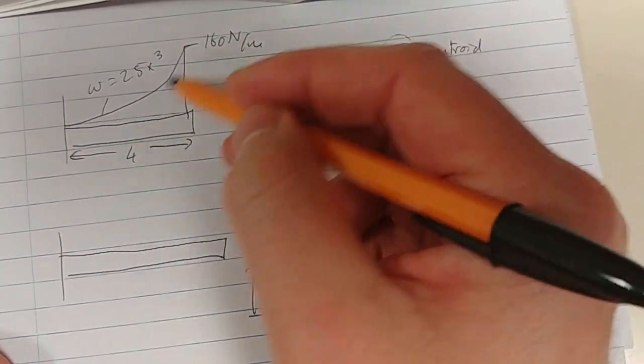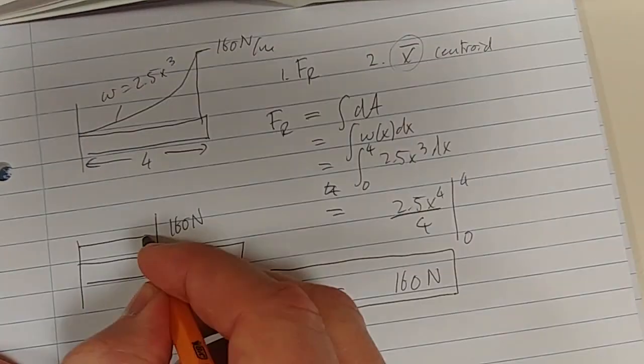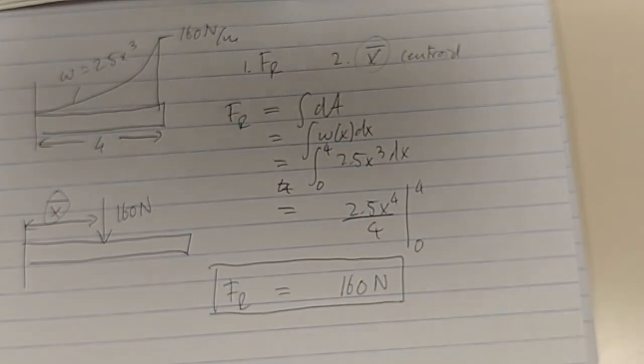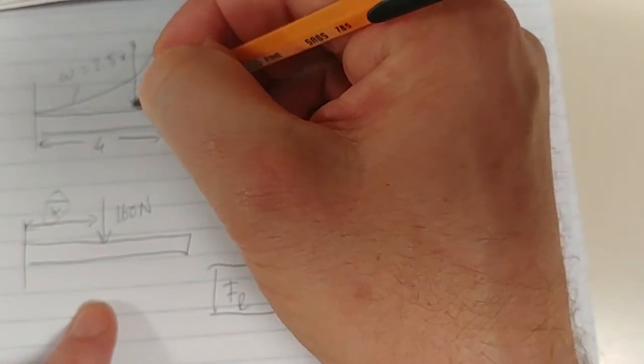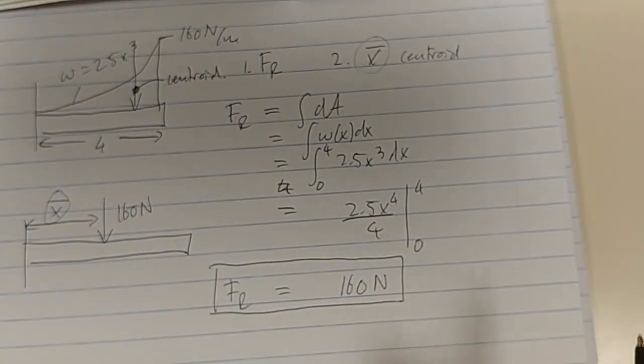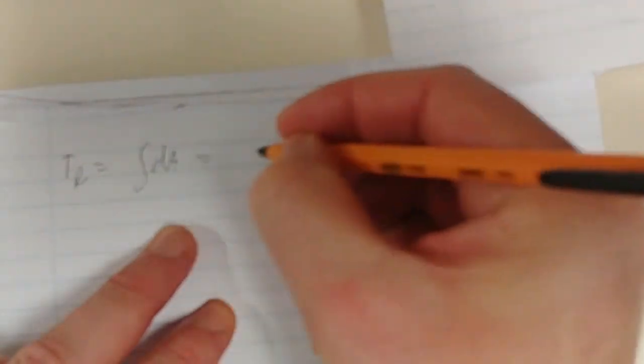The point is that this distributed load has the same effect as applying 160 Newtons, but now we need to determine where along that beam, so we need to determine x̄. We know that this force always acts through the centroid, the center of area. Let's get a new page here.